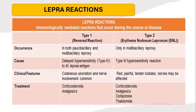A quick look at the different types of lepra reactions. There are two important types: Type 1 or reversal reaction, and Type 2 or Erythema Nodosum Leprosum (ENL). Type 1 reaction occurs in both paucibacillary and multibacillary leprosy, whereas Type 2 occurs only in multibacillary. Type 1 is a delayed hypersensitivity (Type 4) reaction; Type 2 is a Type 3 hypersensitivity reaction. Type 1 presents with cutaneous ulceration and nerve involvement; Type 2 presents with red, painful, tender nodules with possible nerve involvement. Type 1 is treated with corticosteroids and analgesics; Type 2 is treated with corticosteroids, analgesics, Clofazamine, and Thalidomide.